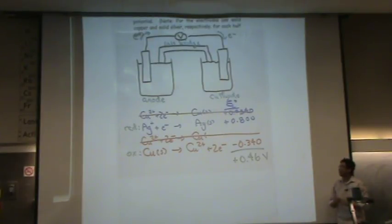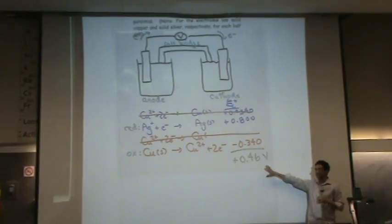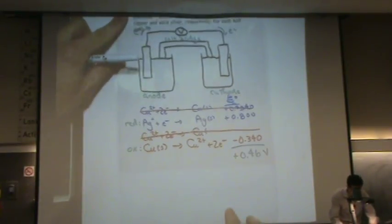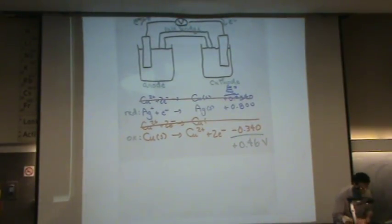All these units are going to be volts. That's a positive number. Positive E squigglies or positive cell voltages makes the whole process spontaneous. It'll happen naturally. We'll learn more about that in a little while. But we want those positives.